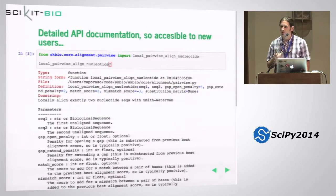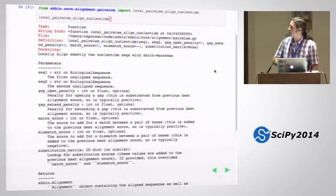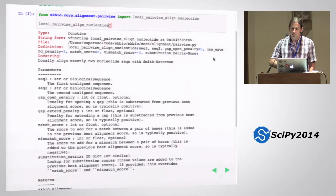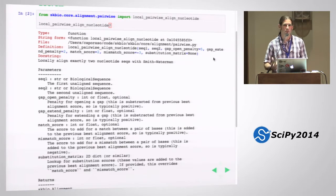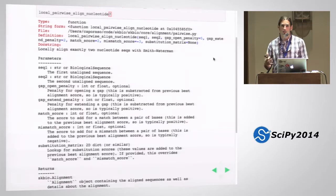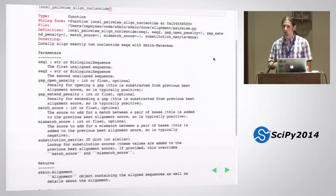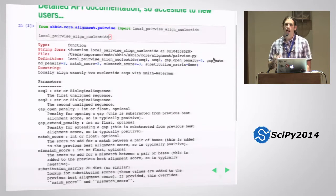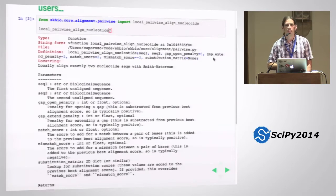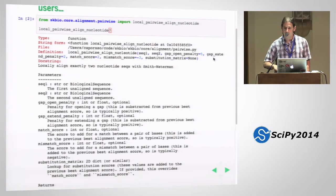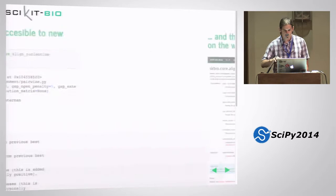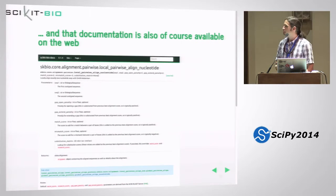We're following the NumPy API documentation standards, so this format should look familiar. Here I'm looking at a local pairwise alignment function — this is a pure Python implementation of Smith-Waterman. A new user or student can use some IPython magic to get the detailed API documentation, learn what parameters it takes and what it returns. They could also use the IPython psource command to look at the source code right in the context of the notebook. Of course all that documentation is also available on the web as an HTML rendering of the same API documentation.